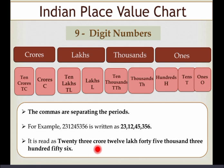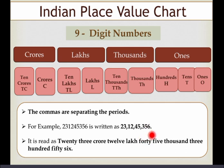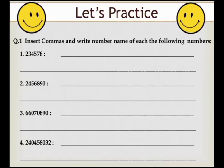Now, how do we read this number? The first part is read as crore, so here it is given as 23 crore. Now you are able to read and write seven-digit numbers and nine-digit numbers.